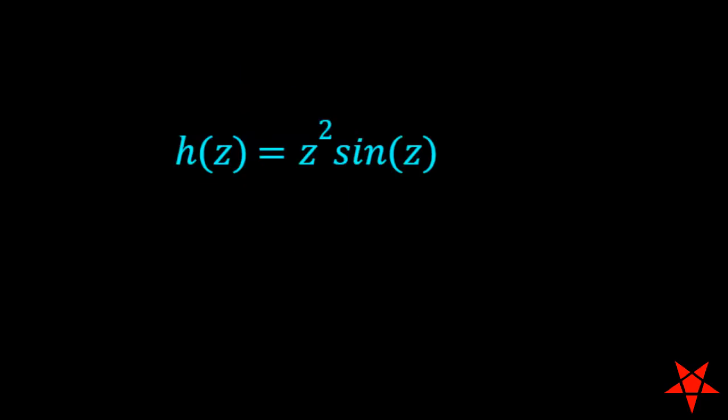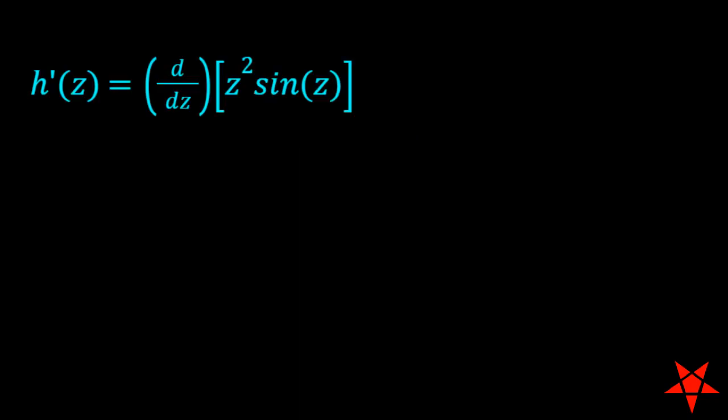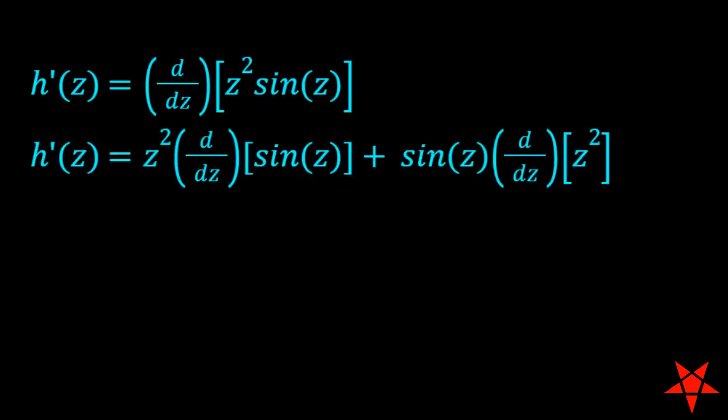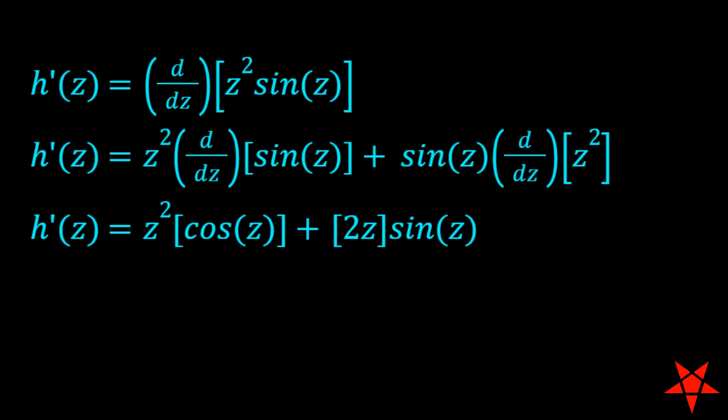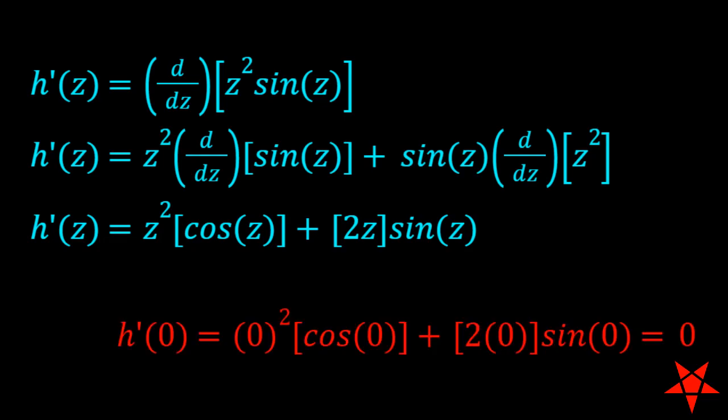Focusing on the denominator of f of z, we see that h of z equals 0 when evaluated at z equals 0. Taking the first derivative of h of z, we find that evaluating it at z equals 0 gives us 0.